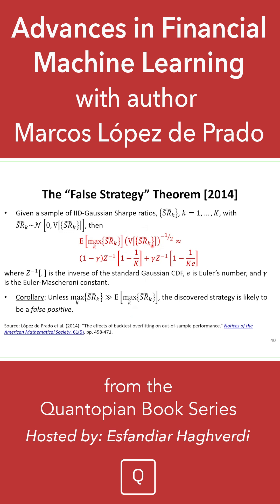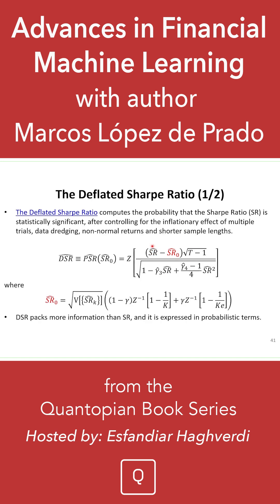Once you do that, you know what is the expected value of the maximum Sharpe ratio, and your model needs to beat that value. Your threshold is no longer that the Sharpe ratio needs to be statistically significantly greater than zero. Now, as your number of trials increases, the higher is your hurdle. You need to make sure that the Sharpe ratio you obtain in your backtest overcomes that threshold. That's one way to compute what is called the deflated Sharpe ratio.